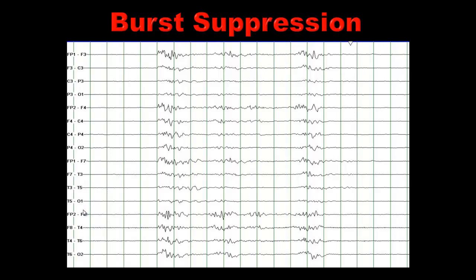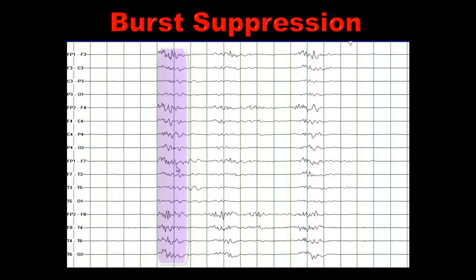Burst suppression pattern — why is it called burst suppression? Because of the picture you see on the slide. This is a period of suppression where amplitudes of the EEG are even less than 5 µV, then there is a period of a burst of activity — in this case it lasts 2 seconds — then some suppression, then another burst. When reporting a burst suppression pattern, you have to identify that the bursts last anywhere from 2 to 10 seconds and the periods of suppression last from 5 to 10 seconds.